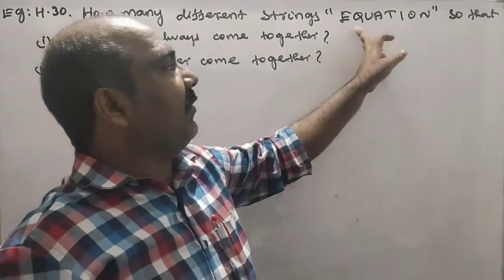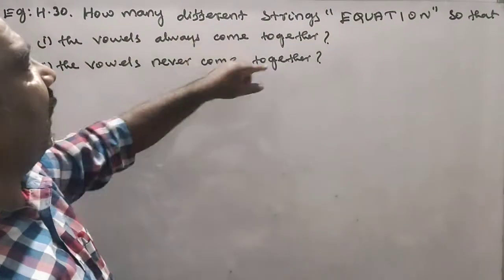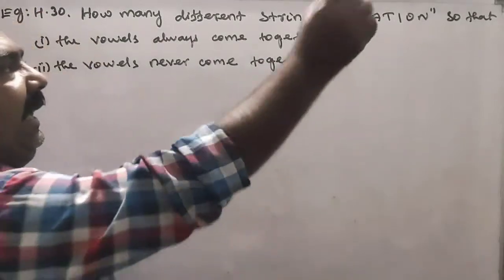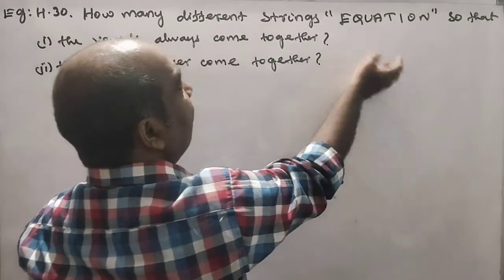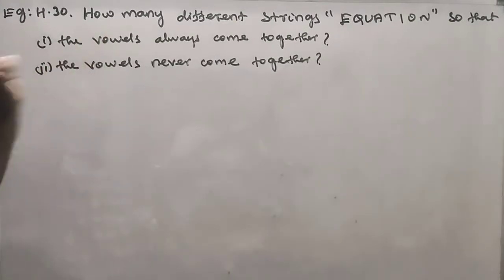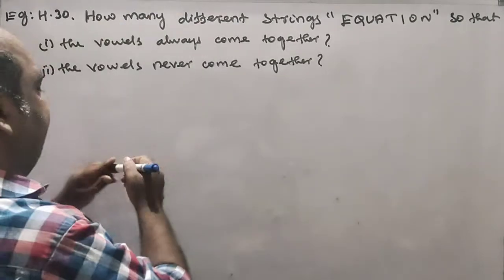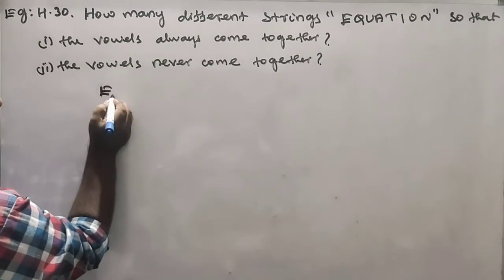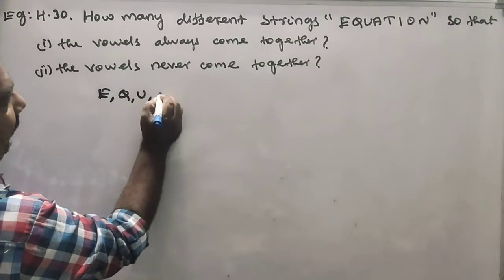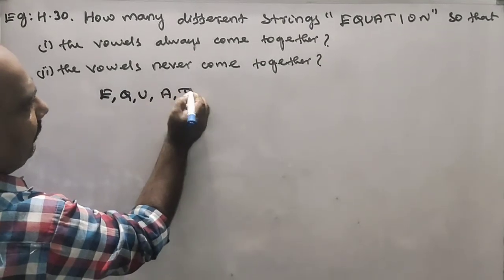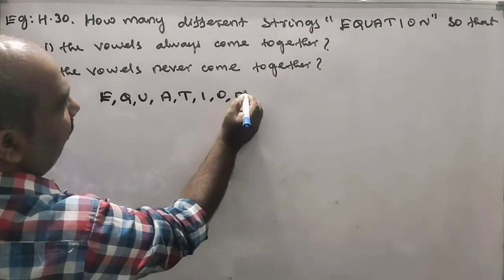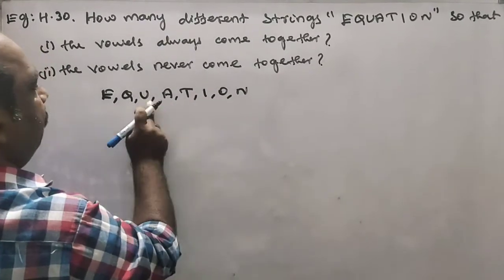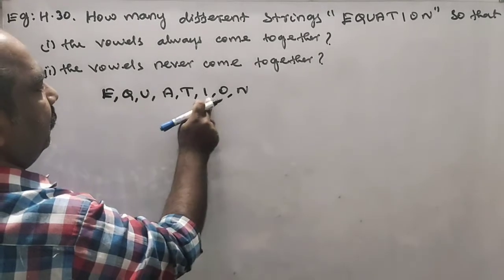The equation is one word. Let's test it out. The word is E, Q, U, A, T, I, O, N — that's 1, 2, 3, 4, 5, 6, 7, 8 letters. So the word EQUATION has 8 letters.